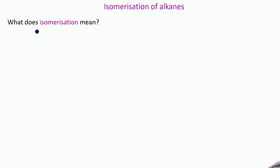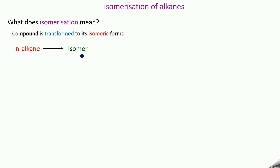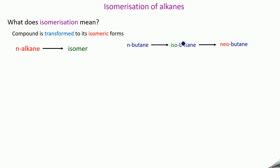Next, we have isomerization of alkanes. Isomerization is a chemical process in which a compound is transformed to any of its isomeric forms. You take an N-alkane — a normal alkane — and it is converted to its isomer. Isomers are compounds that have the same chemical formula but different structural formula. For example, N-butane is converted to isobutane, and isobutane is converted to neobutane — all having the same molecular formula but different structural formulas. Simply put, it is a process in which one isomer is converted to another isomer.